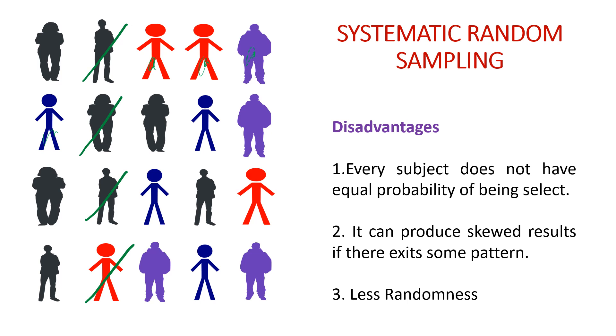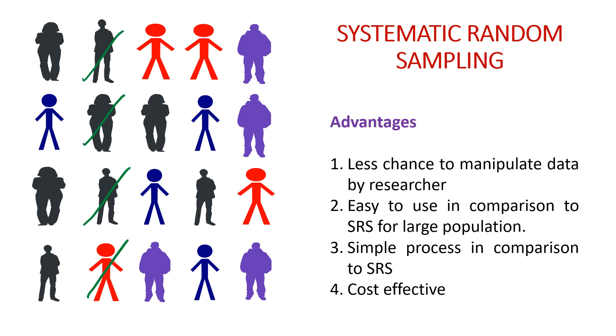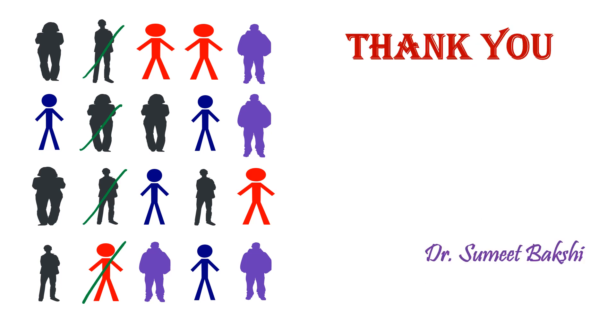There are many advantages also. In systematic random sampling there is less chance to manipulate data by the researcher because we are using a fixed periodic interval. So the researcher cannot manipulate data by himself or herself. It is easy to use in comparison to simple random sampling for large populations, which simple random sampling is difficult for. Simple process in comparison to simple random sampling. It is also cost effective in comparison to simple random sampling.